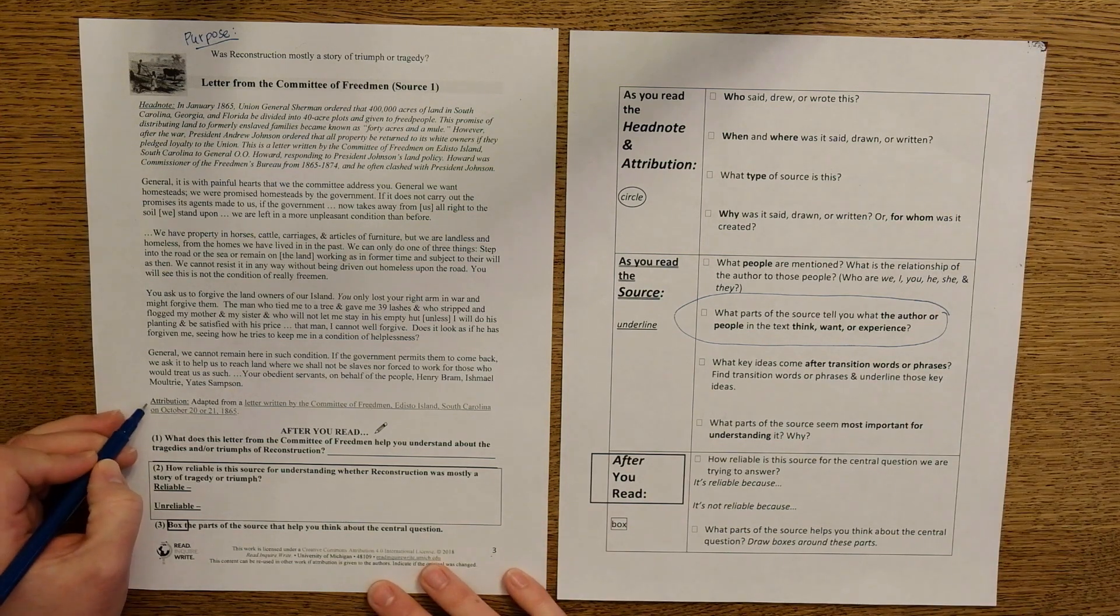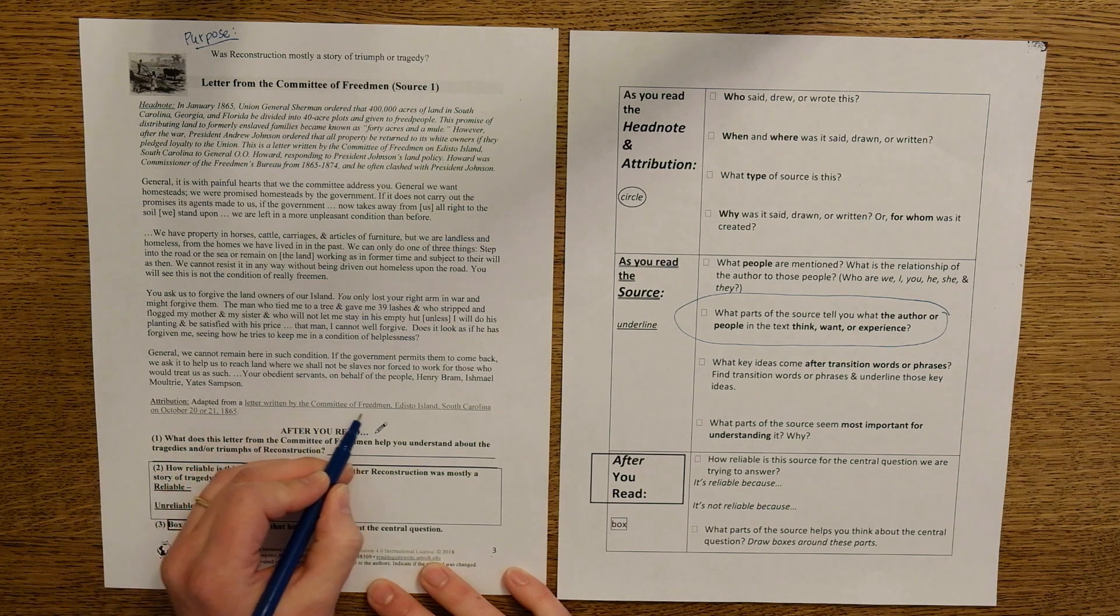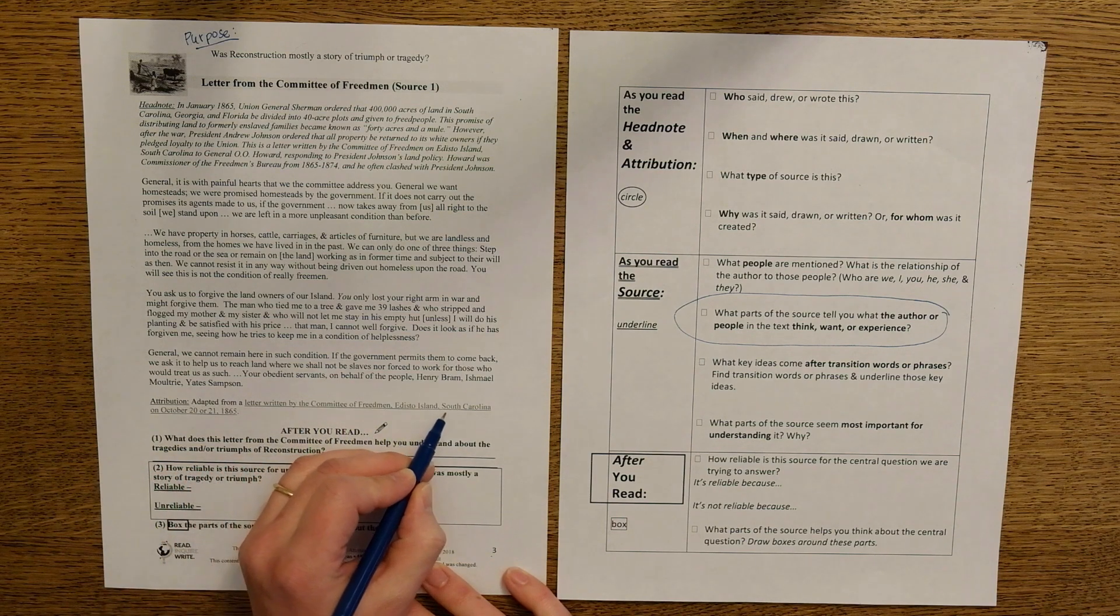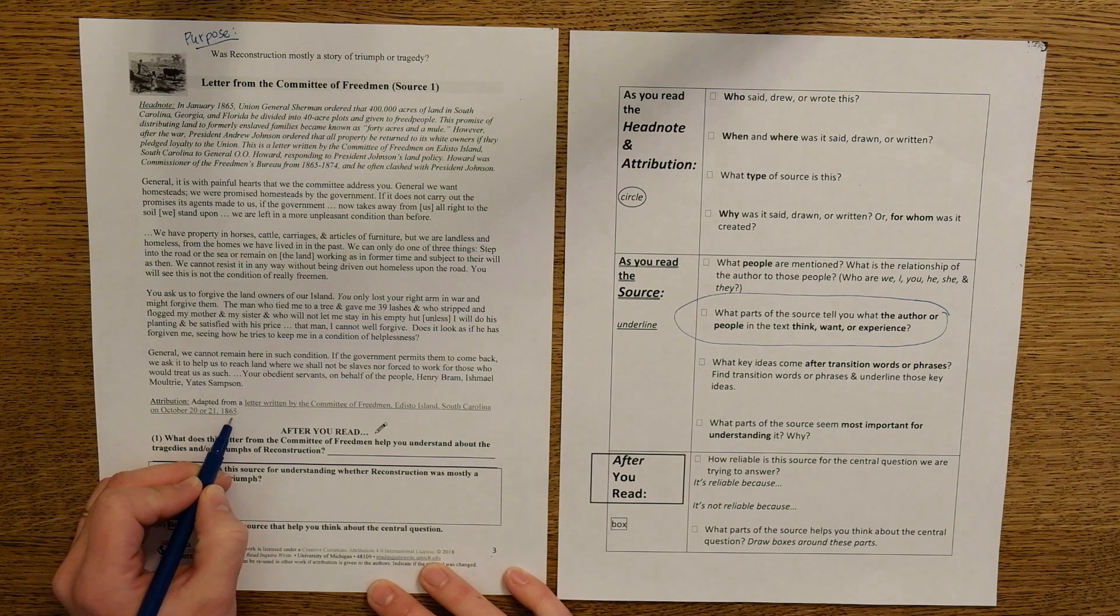It says, Attribution, adapted from a letter written by the Committee of Freedmen, Edisto Island, South Carolina, on October 20th or 21st, 1865.